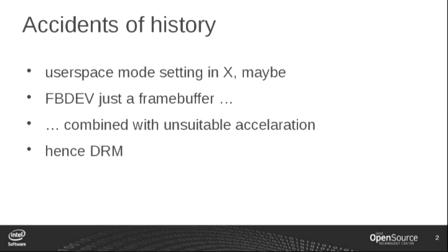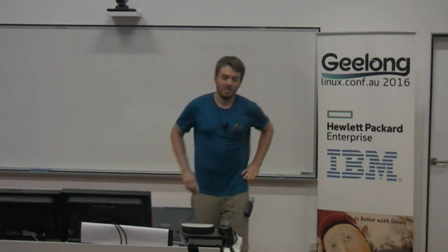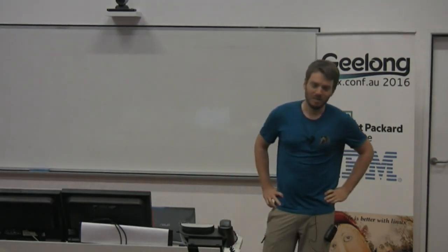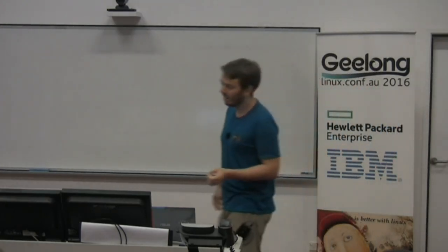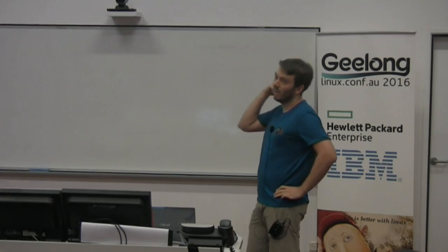Linux also had real in-kernel display drivers in the FBDEV subsystem, but FBDEV is just a dumb frame buffer. If you want to select outputs or have two outputs, FBDEV needed hacky extensions that just couldn't do it. It was combined with a totally unsuitable acceleration architecture designed for the blitter engines of the 90s, not for 3D with big chunks of driver in user space. Hence, we had the DRM — the Direct Rendering Manager — with three different drivers fighting over the same hardware and tripping over each other.